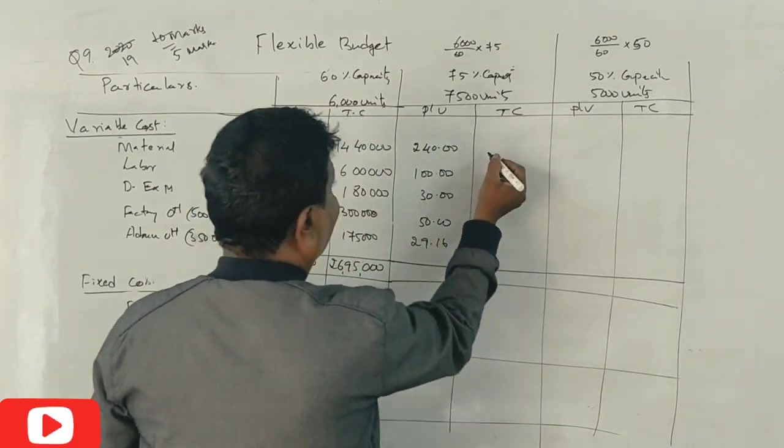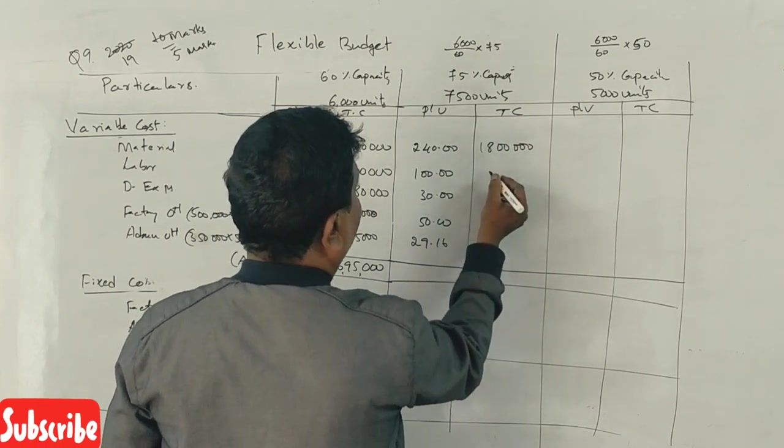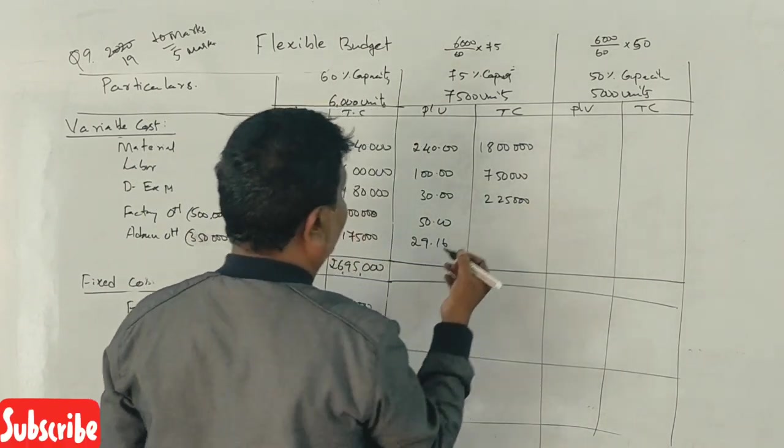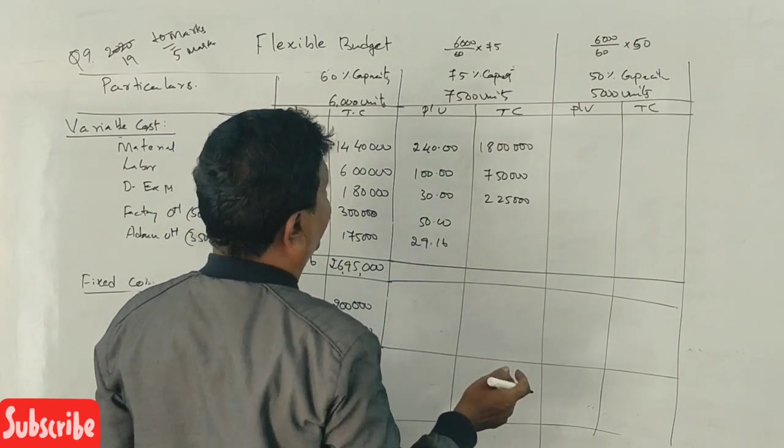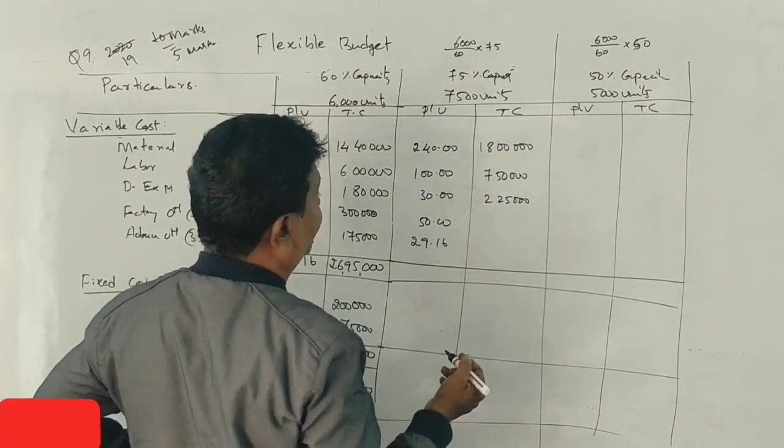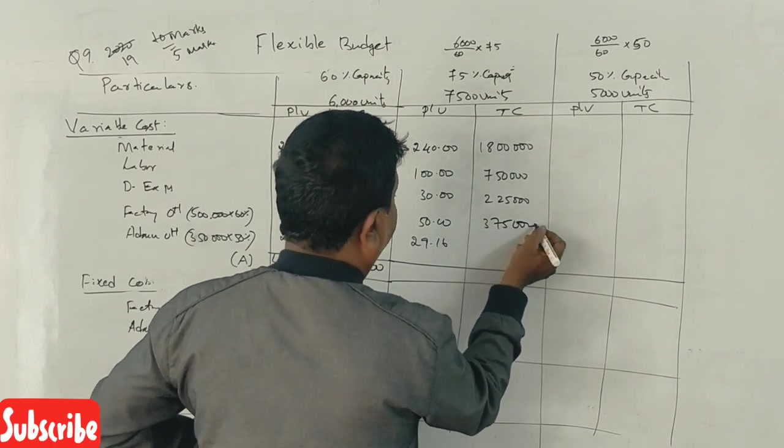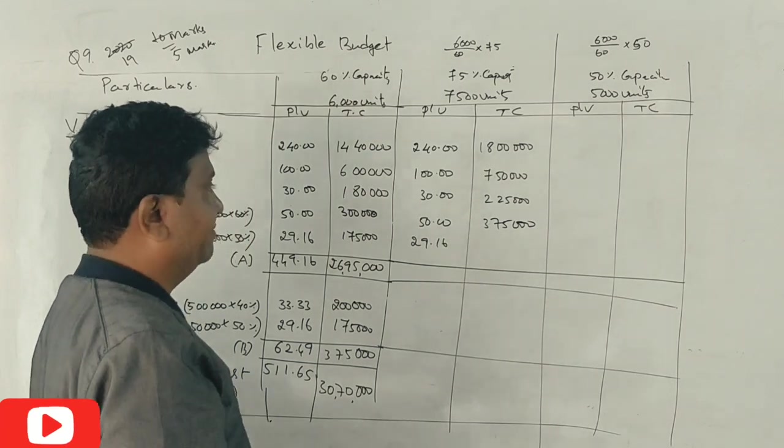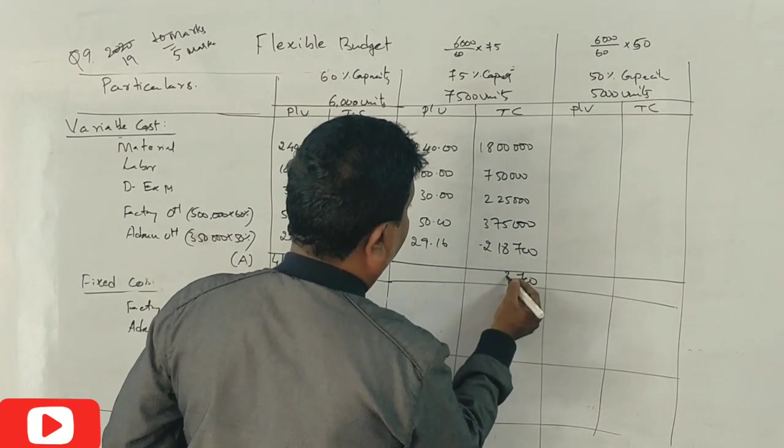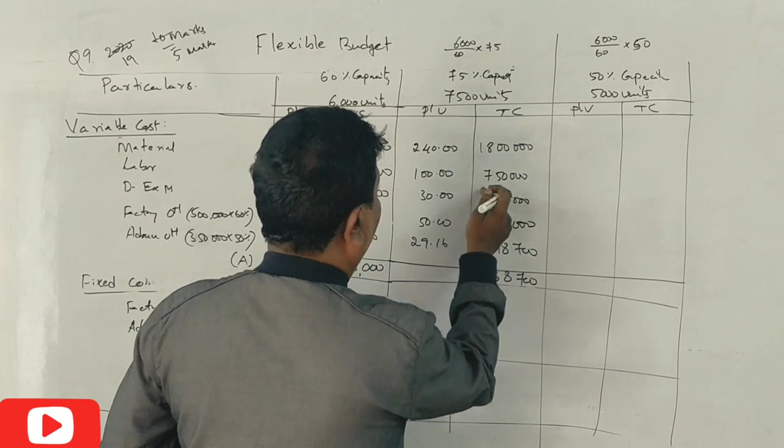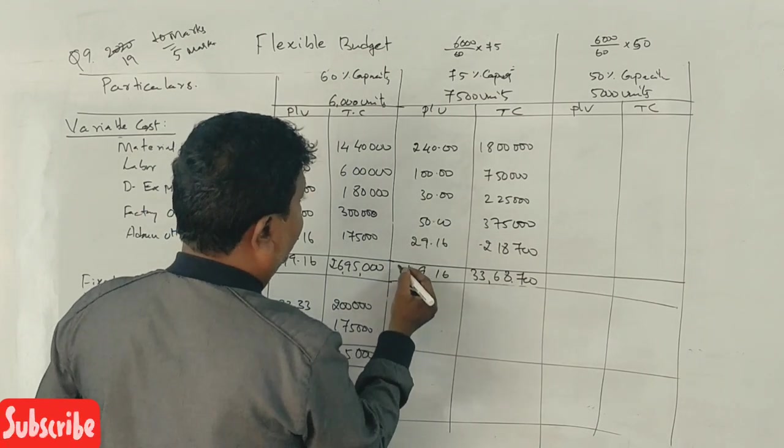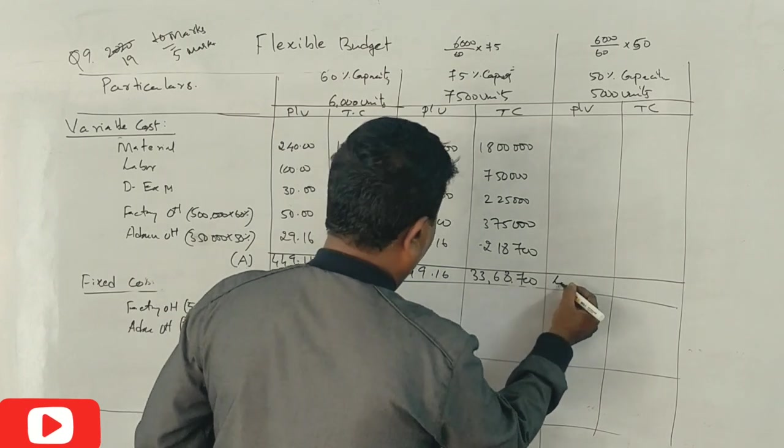At 75% capacity with 7,500 units: Material 18 lakhs, labor 7 lakhs 50,000, direct expenses 2 lakhs 25,000, factory overhead variable 3 lakhs 75,000, administration 29.16 into 7,500 equals 2 lakhs 18,700. Total variable cost remains 449.16 per unit.